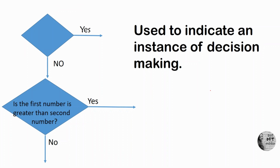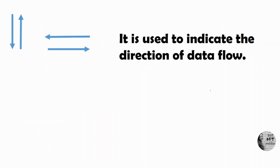This is the decision-making symbol — a diamond shape. We did not use this in grade 6, but you have to use it in grade 7. We use this symbol for decision making. For example: Is the first number greater than the second number? If yes, you follow one process; if no, you follow another process. However, when writing an algorithm or flowchart with decisions, there should always be one end. And finally, arrows are used to indicate data flow direction.